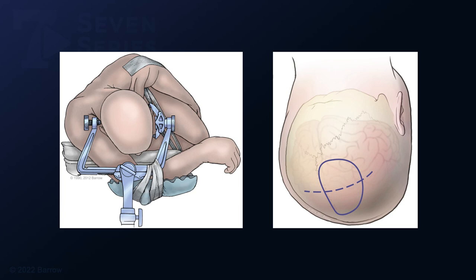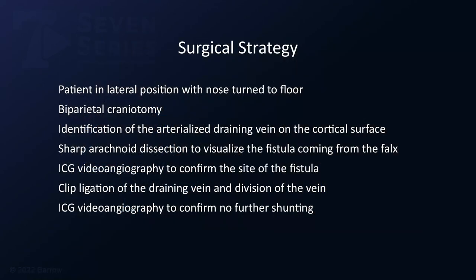A biparietal craniotomy was needed to expose this. The surgical strategy consisted of the lateral patient position with the nose turned to the floor, a biparietal craniotomy, identification of the arterialized draining vein on the cortical surface, sharp arachnoid dissection to visualize the fistula originating from the falx, ICG video angiography to confirm the site of the fistula, clip ligation and division of the draining vein, and repeat ICG video angiography to confirm the absence of shunting.